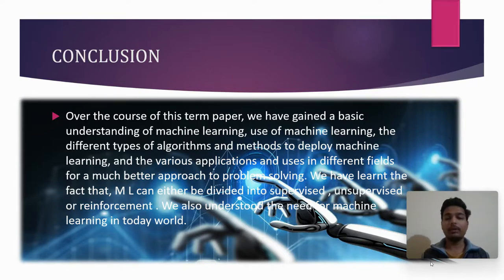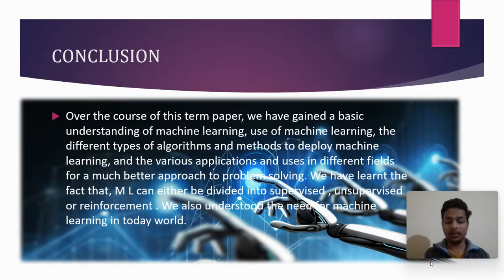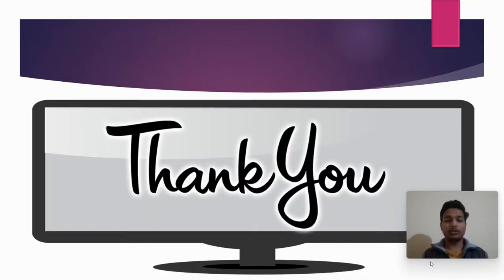Now the conclusion of my term paper: over the course of this term paper, we have gained a basic understanding of machine learning, the use of machine learning, the different types of algorithms, methods to deploy machine learning, and the various applications in different fields for a much better approach to problem solving. We have learned that machine learning can be divided into supervised, unsupervised, or reinforcement learning. We also understand the need for machine learning in today's world. This is all about my term paper — thank you very much.